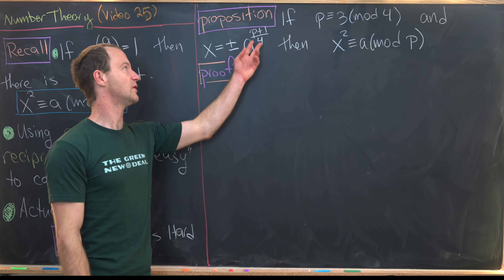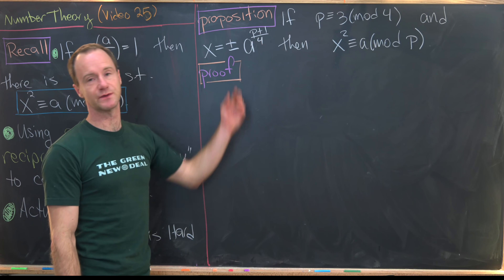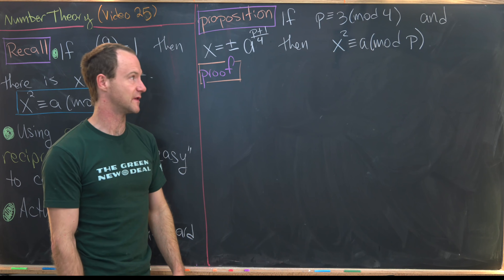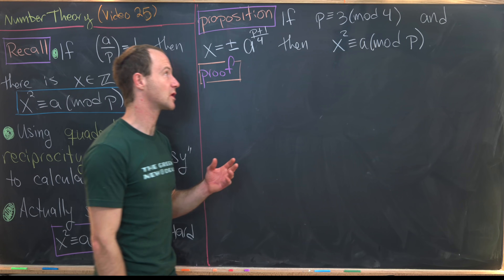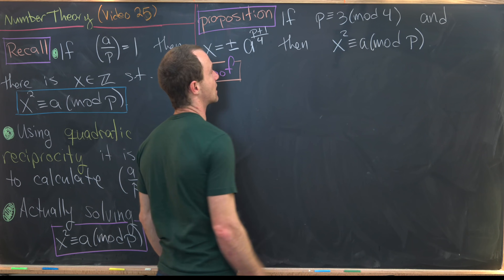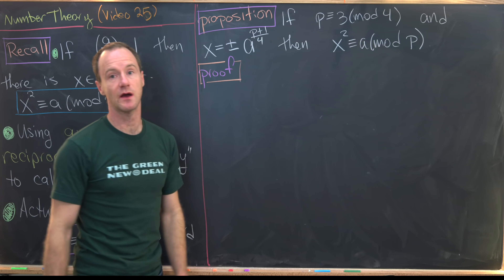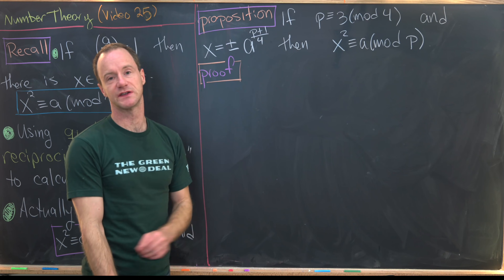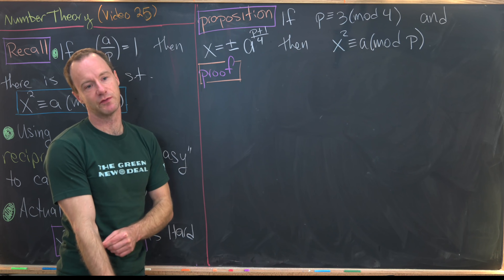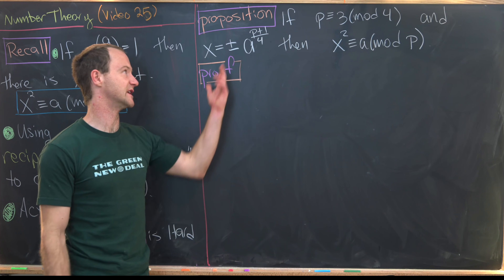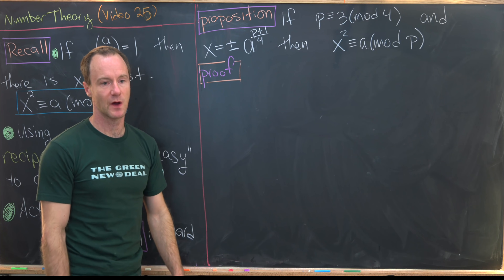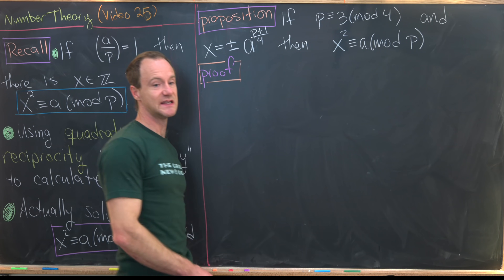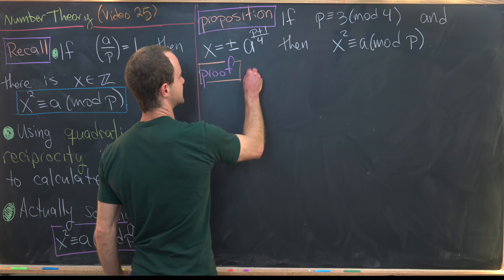You might be worried because we have something that looks like a rational number in the exponent, but we're okay because if p ≡ 3 mod 4, then p+1 is a multiple of 4, so we can divide by 4. Now let's see how the proof goes.